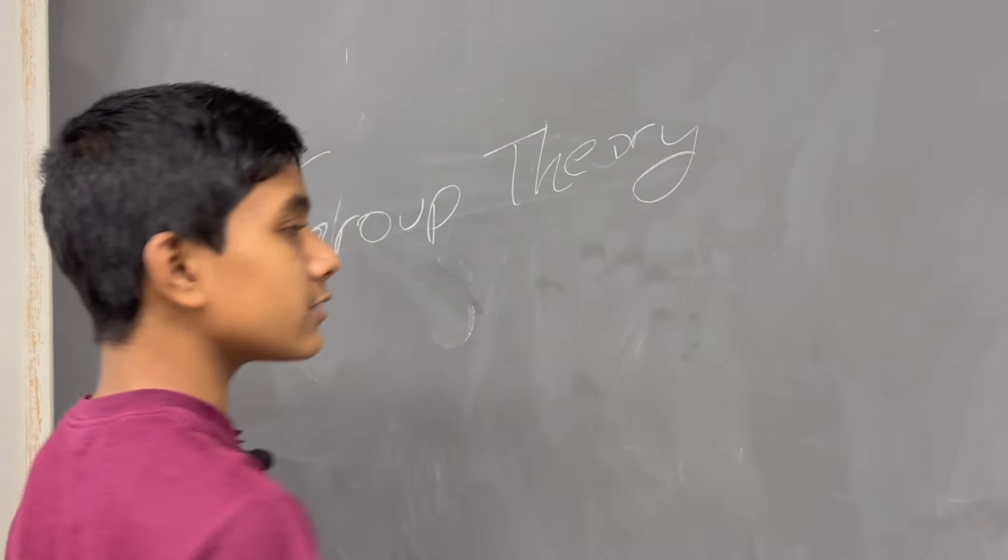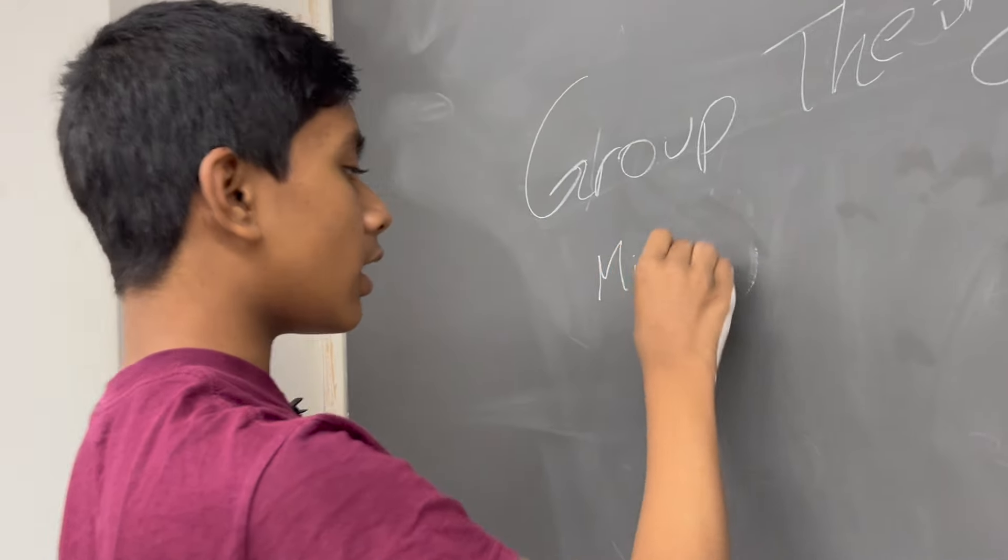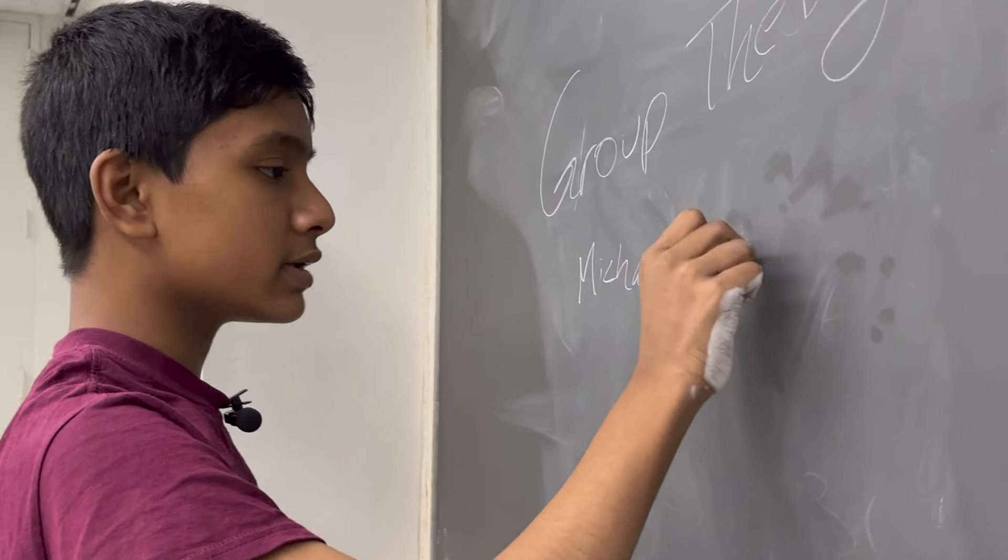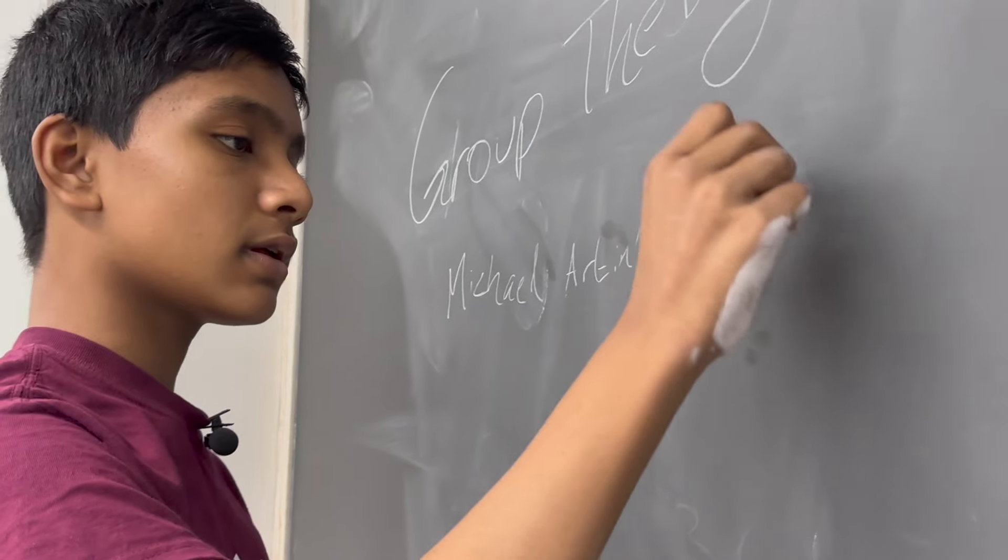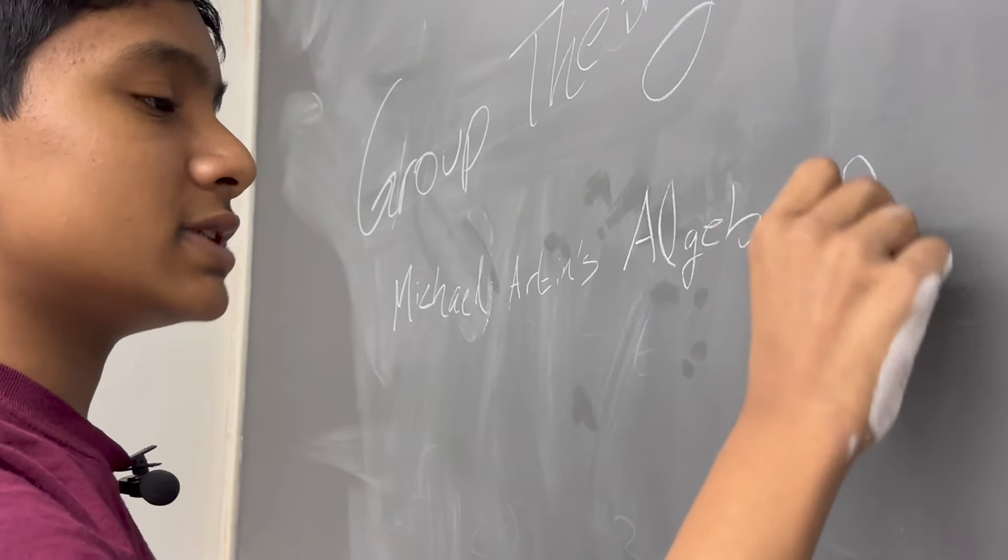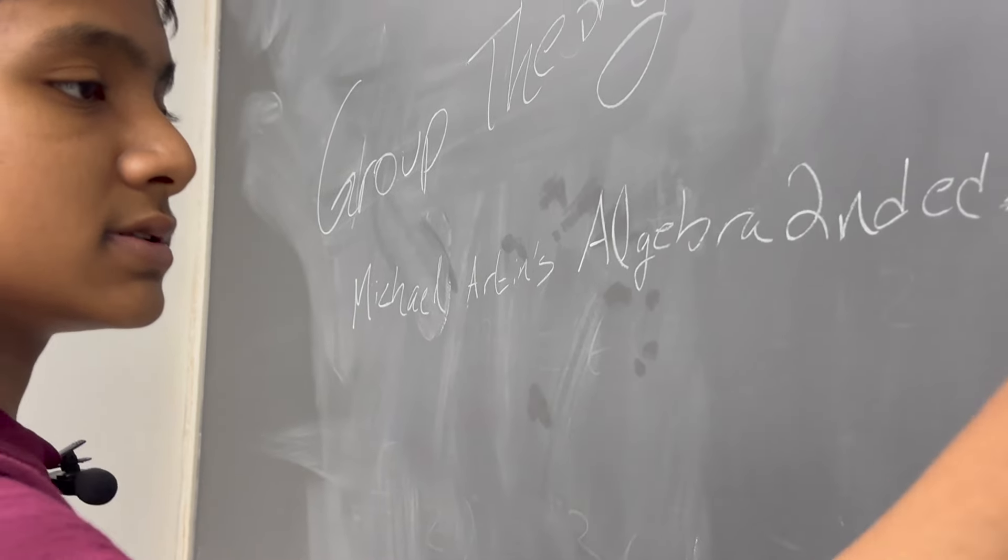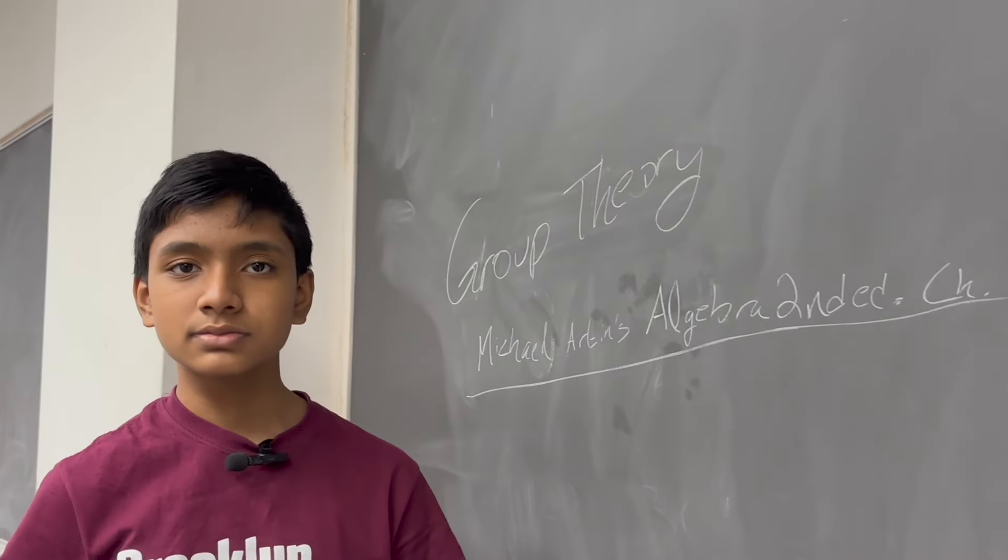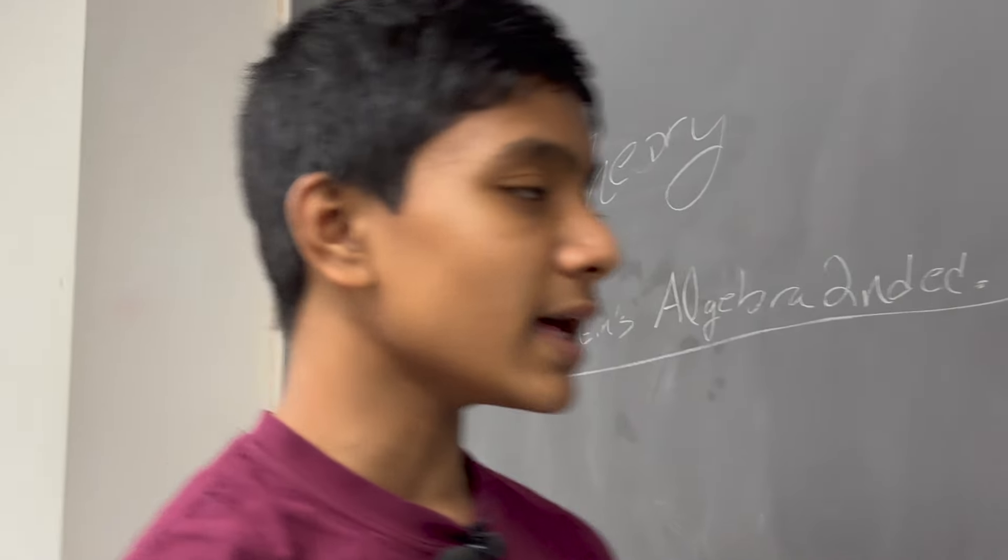Everything I'm talking about today comes from Chapter 6 of Michael Arden's book on Advanced Algebra, which is simply titled Algebra, 2nd edition, Chapter 6. That's where you can find additional resources, problems, and probably some things that are included in there that I've forgotten in this lecture.